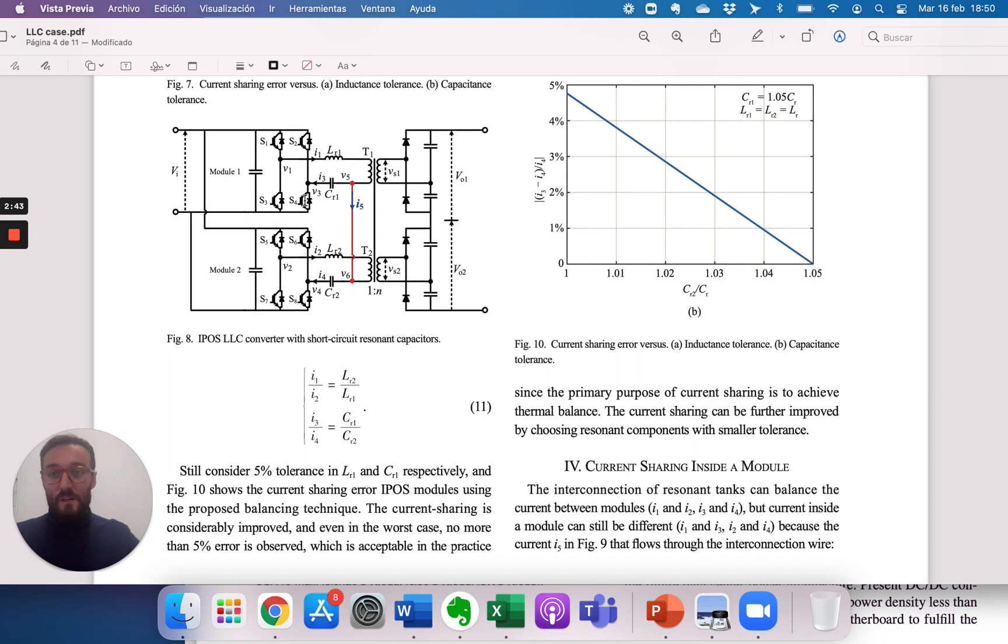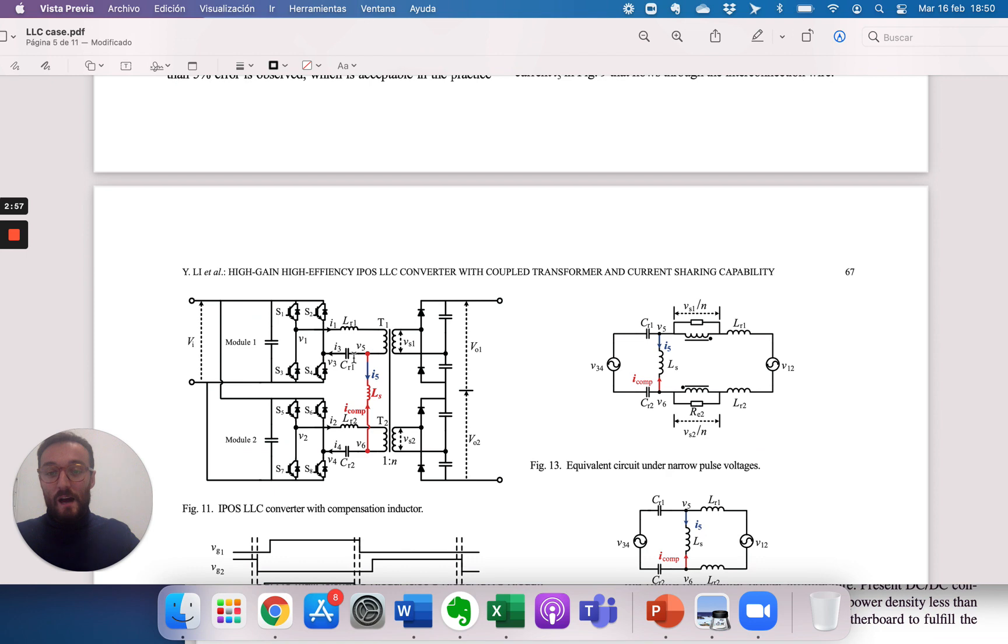In order to keep the current sharing equally between the two parallel inputs they connect both windings with a wire. Then they realize that there is a lot of circulating currents and then they add an inductor in order to increase the impedance in the connection.